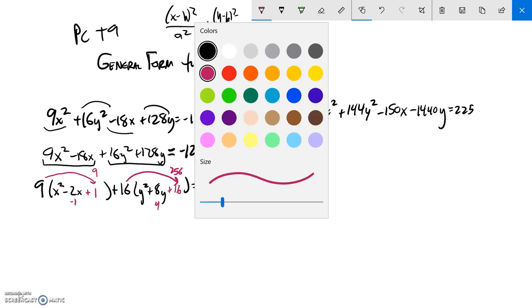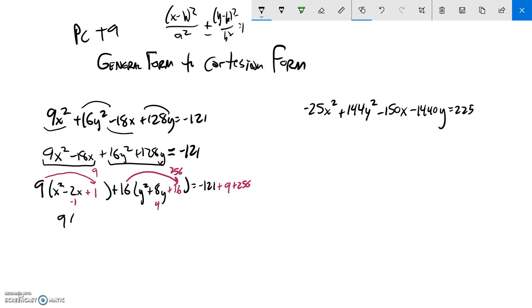So now as I go from here, notice I have 9 times x minus 1 squared. This right here I can write as that square. This right here I can write as y plus 4 squared equals. And then this over here, I'm just going to do a little bit of arithmetic and balance that out. Add all those things together and get 144.